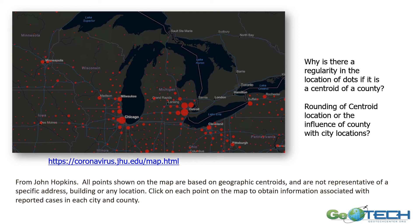One thing I noted when I zoomed in on U.S. data is why there are such regularities in the dot density. It's using the centroid of the counties, but I think the centroid locations may have had some decimal places eliminated. I'm also wondering if some of the rounding of locations was influenced by the large cities in the same area.